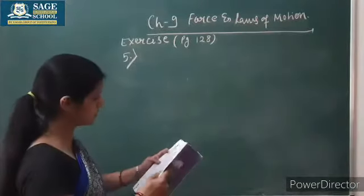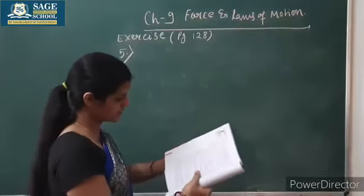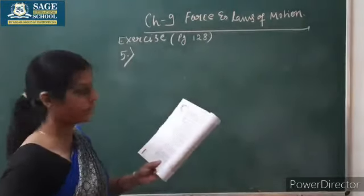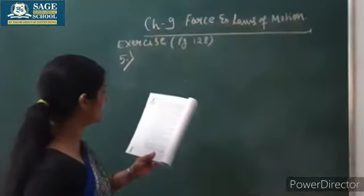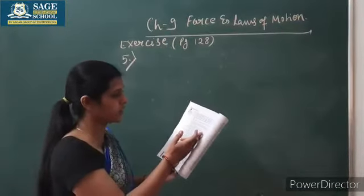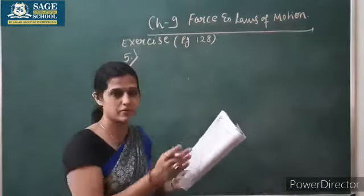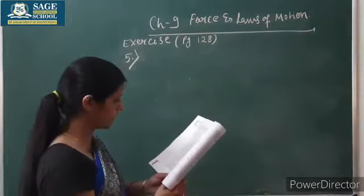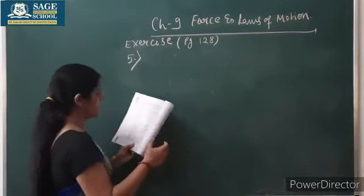I am going to solve some problems from your exercise of the same chapter which is given on page number 128. Here there are a few problems which are theoretical. I hope you are able to solve it by yourself. I am here for solving a numerical which is unsolved problem number 5.